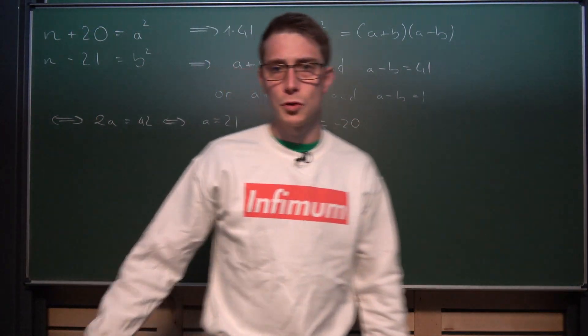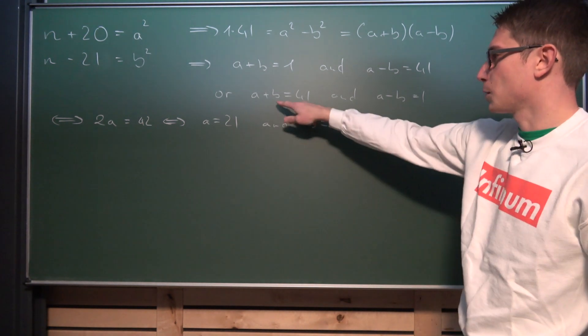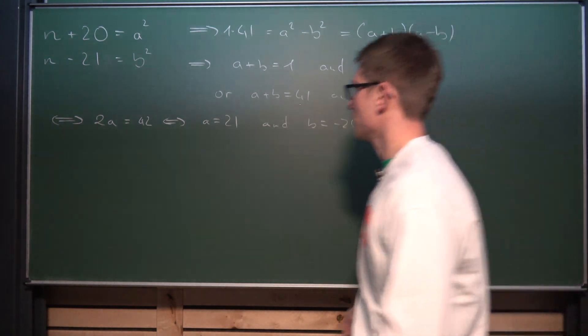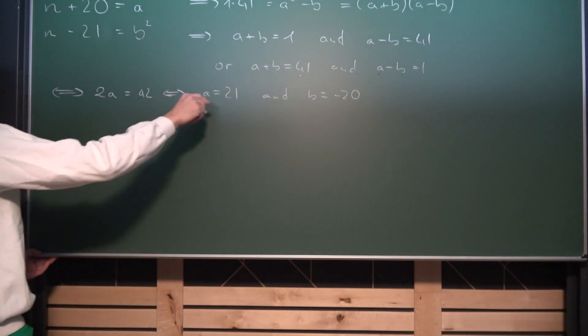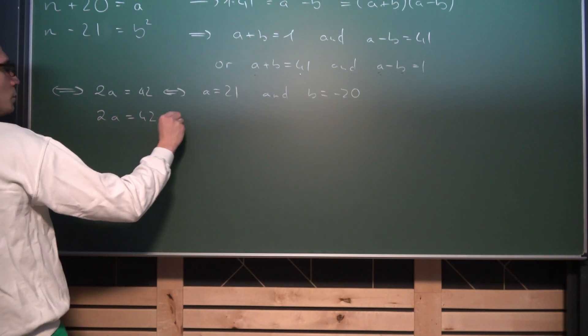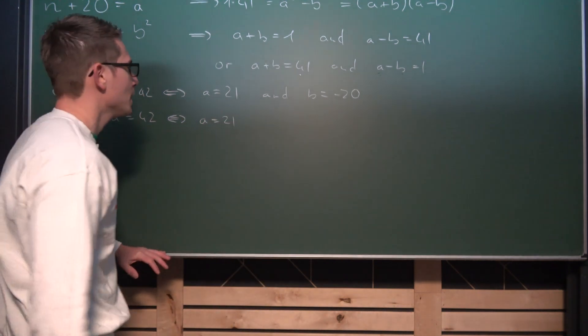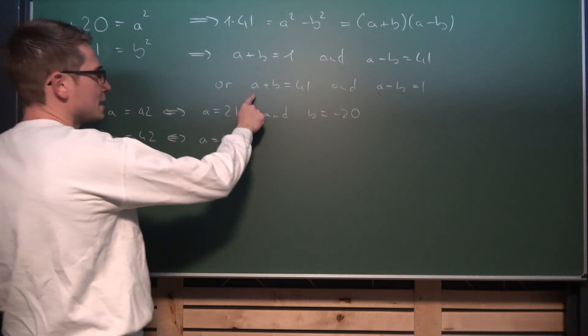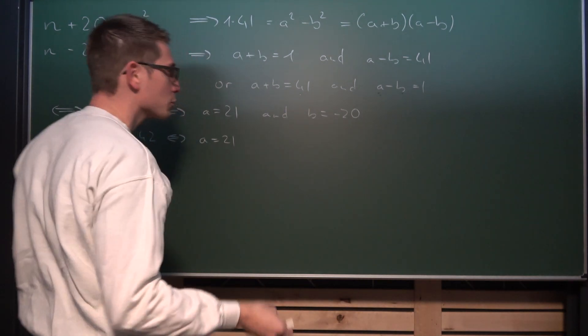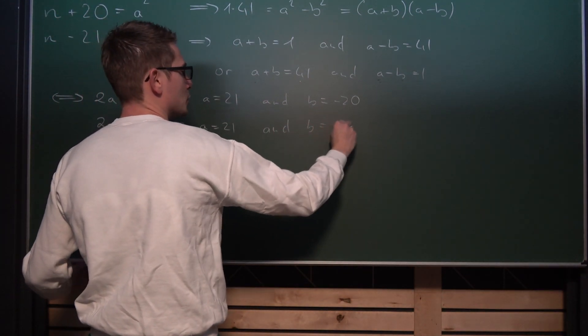So those are our two solutions for the first case. Now what about the second case here? A plus B equals 41 and A minus B equals 1. Let us add both equations together once again, resulting in 2 times A being equal to 42. That also means that A equals 21, and now we get A being equal to 21 plus B must be equal to 41, so we get that B must be equal to 20.